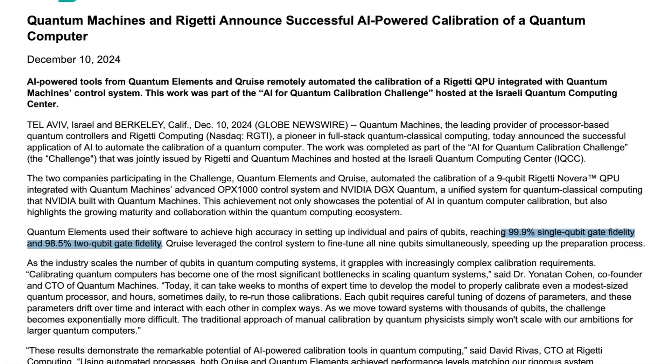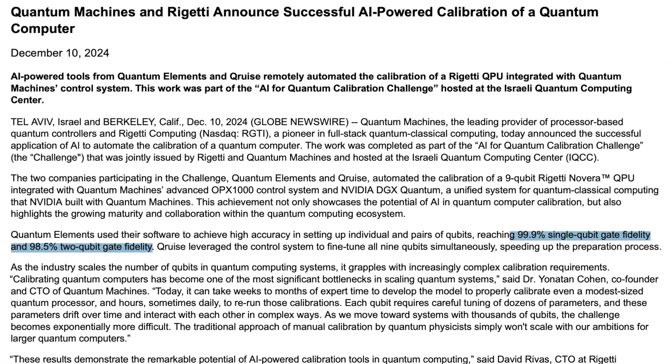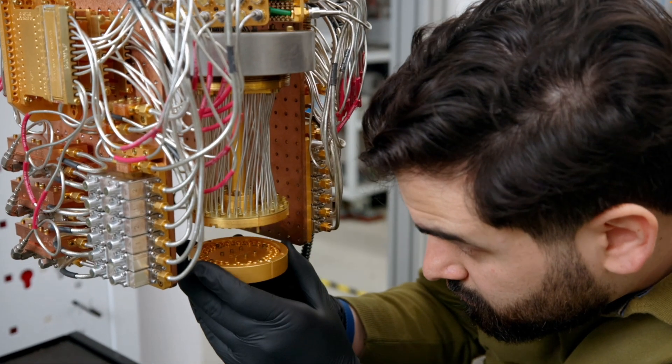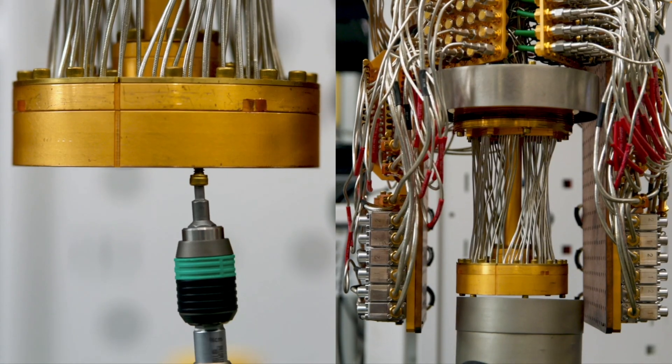Here's what they achieved. Quantum Elements hit 99.9% accuracy for single qubits and 98.5% for 2-qubit operations. Meanwhile, Cruise fine-tuned all 9 qubits at the same time.